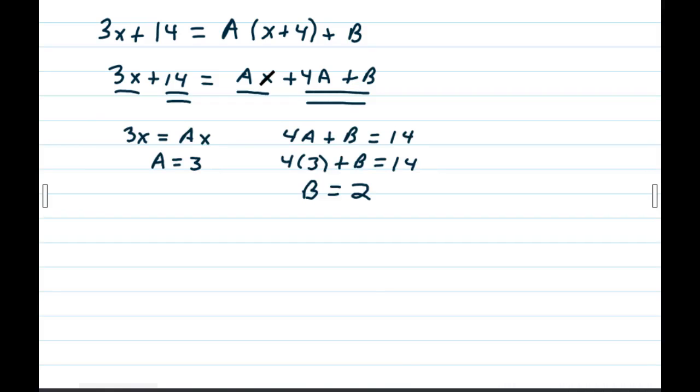So we have 3x is equal to Ax. Again, A is 3. What do we do with the other one? We have 4A plus B is equal to 14, but we know what A is. It's 3. So we have 4 times 3 plus B, and when we solve that, we'll get B is equal to 2.